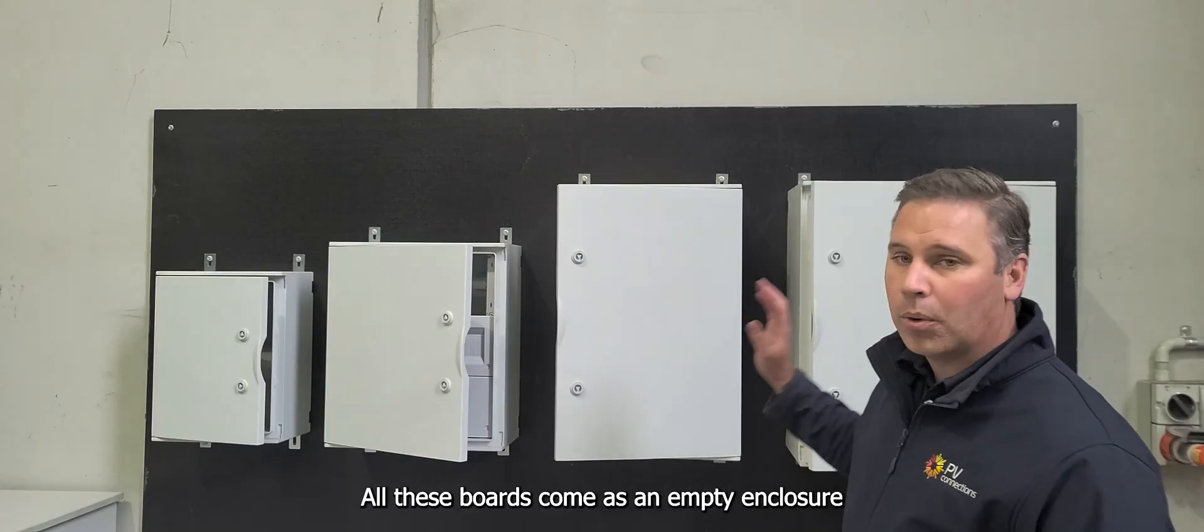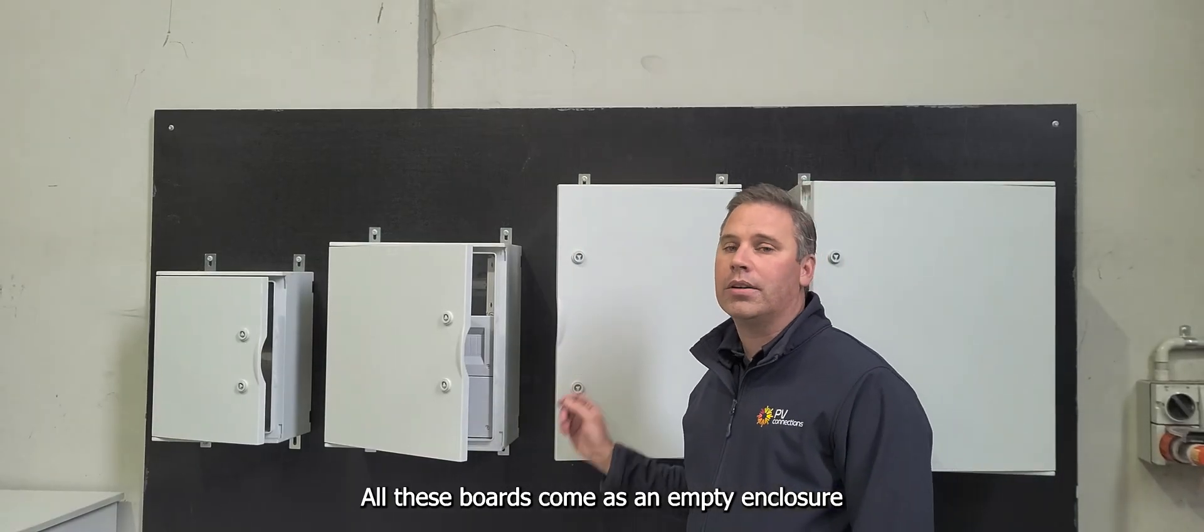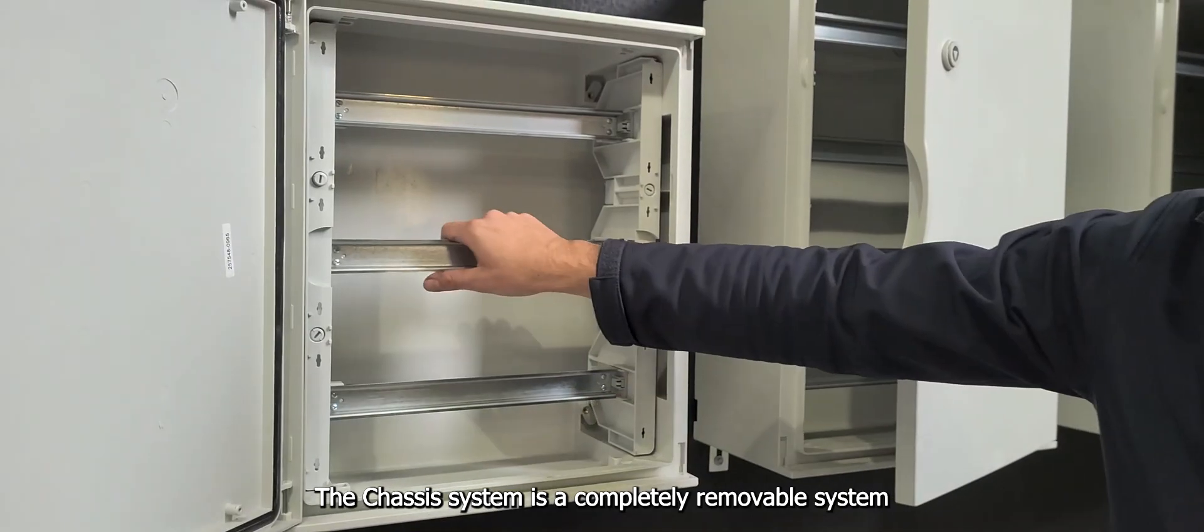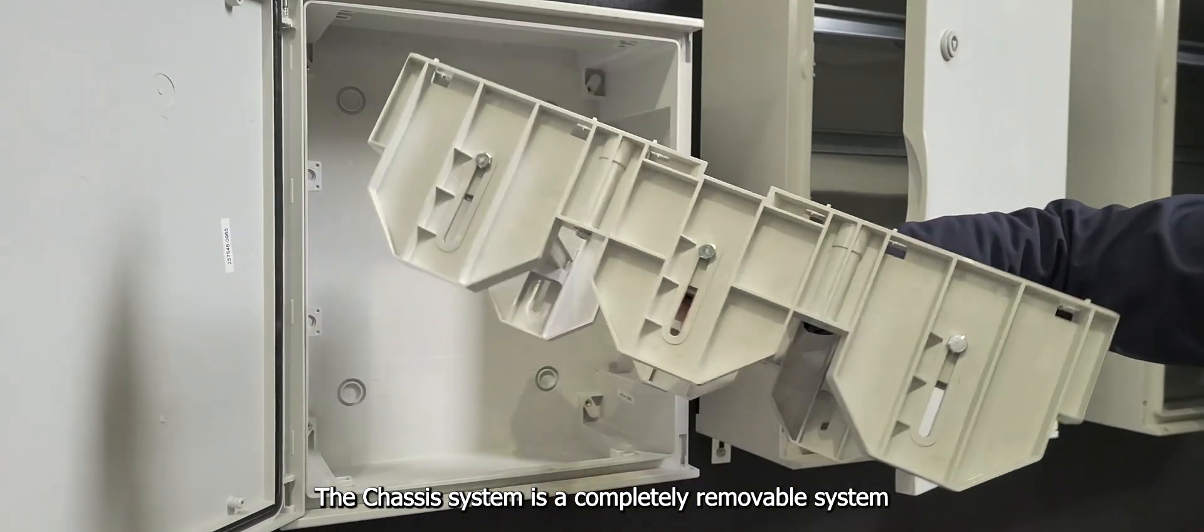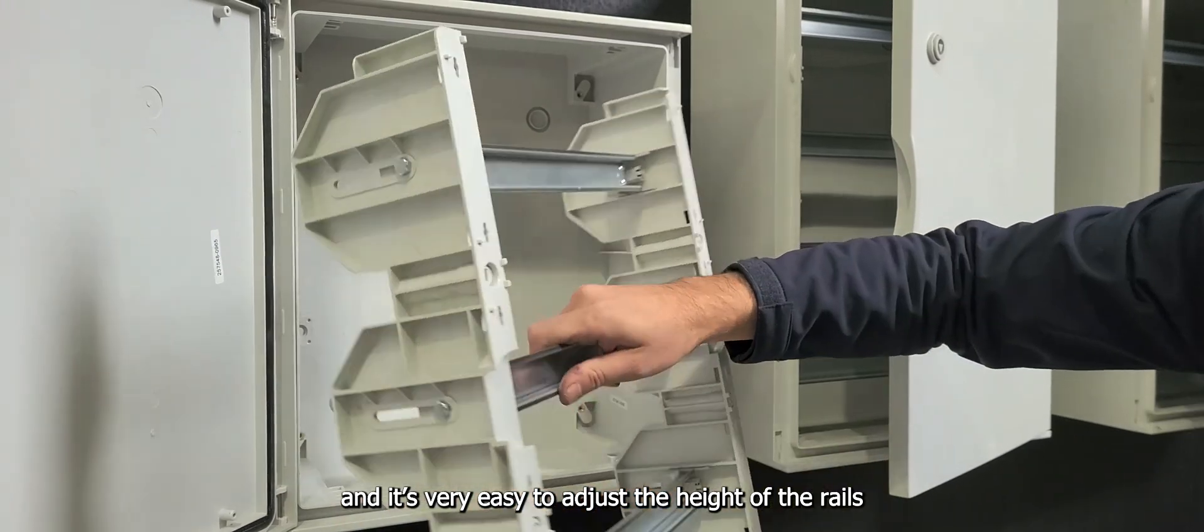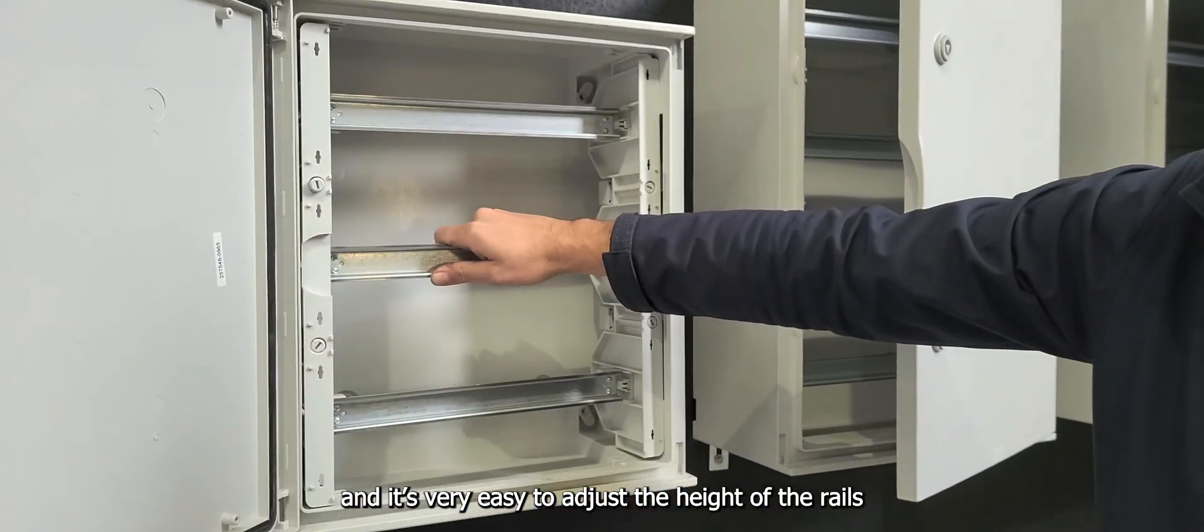Now all these boards come as an empty enclosure but then you can get a chassis system to suit them. The chassis system is a completely removable system and it's very easy to adjust the height of each of the rails there.